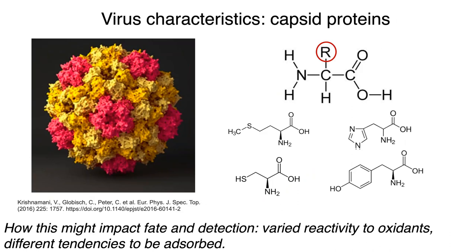Beyond the genome, viral genomes are encapsulated in a protein coat. These protein coats are often repeated proteins creating the capsid structure — a virus may have five or six different protein types repeated throughout the capsid. These proteins are made up of amino acids with different chemistries, impacting things like the charge of the particle or its hydrophobicity — both important for detection and environmental fate. We often think about how these characteristics might differ from virus to virus.